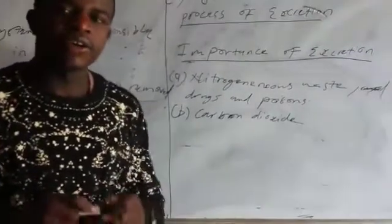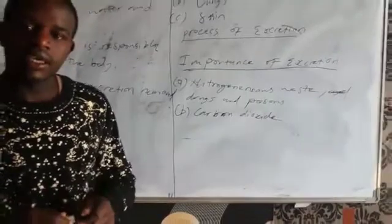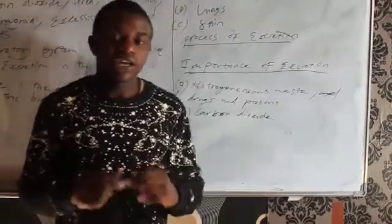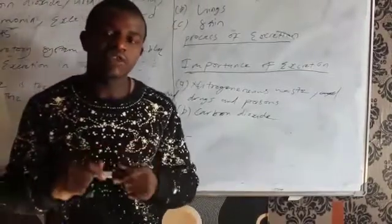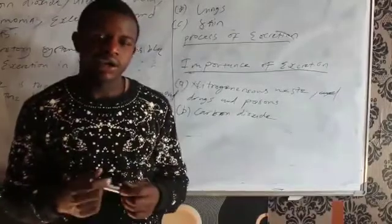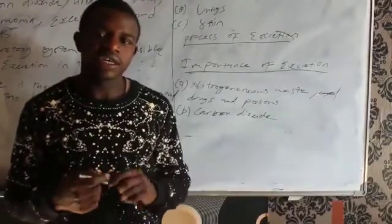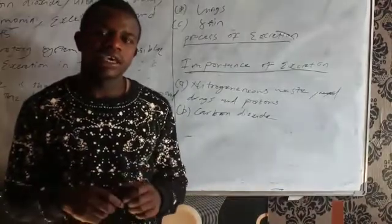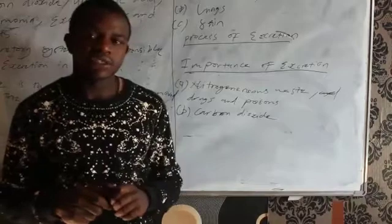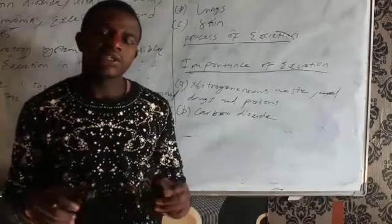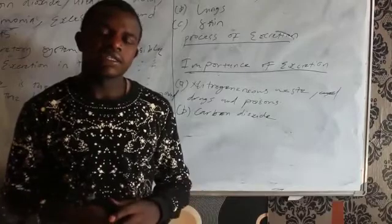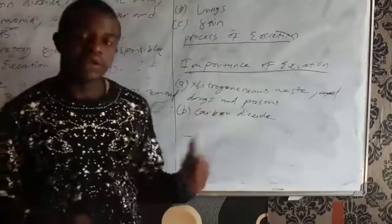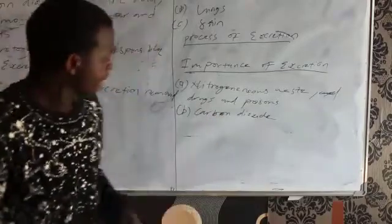When carbon dioxide is left to accumulate in the body, it dissolves in water found in blood and forms carbonic acid. This carbonic acid changes the pH of the cells, causing the cells to die and the whole organism to die. So carbon dioxide must be removed.